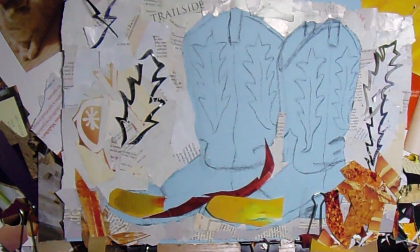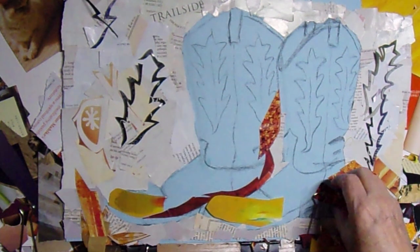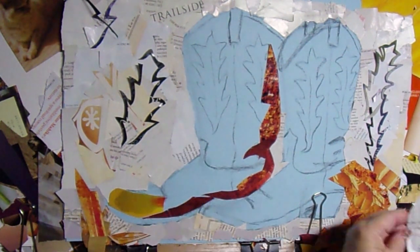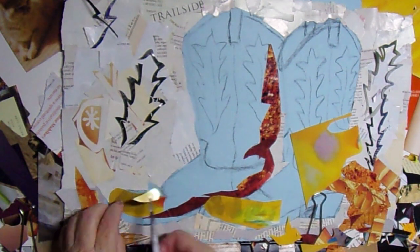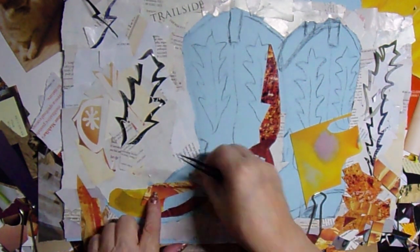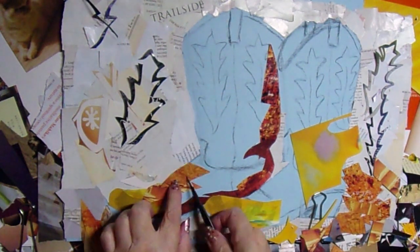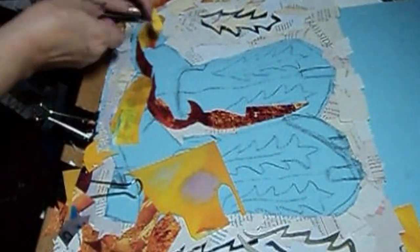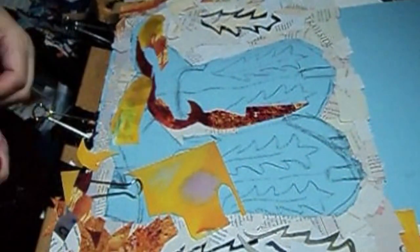Now the leaf pattern I cut out ahead of time, because as you can see, I'm going to cover up a lot with my background colors. And I don't want to lose the pattern itself. So I had to stick on those leaf patterns after I put all the rest of this background color onto the boots themselves.